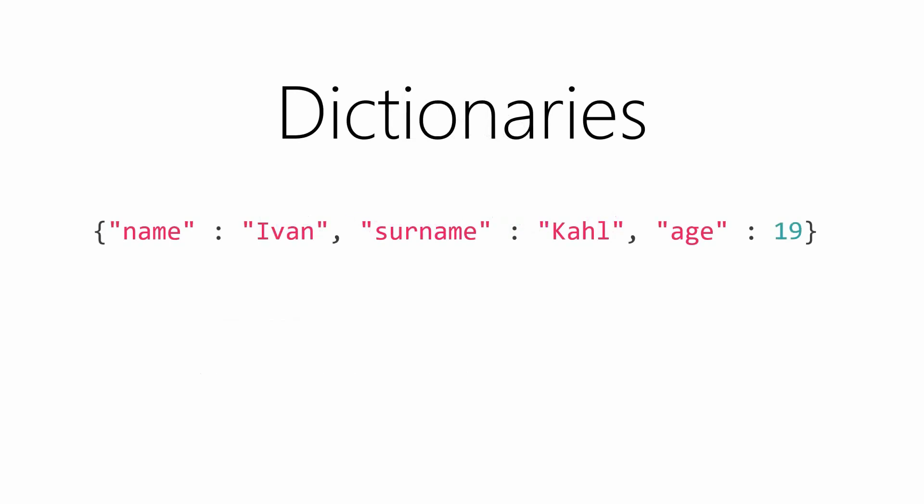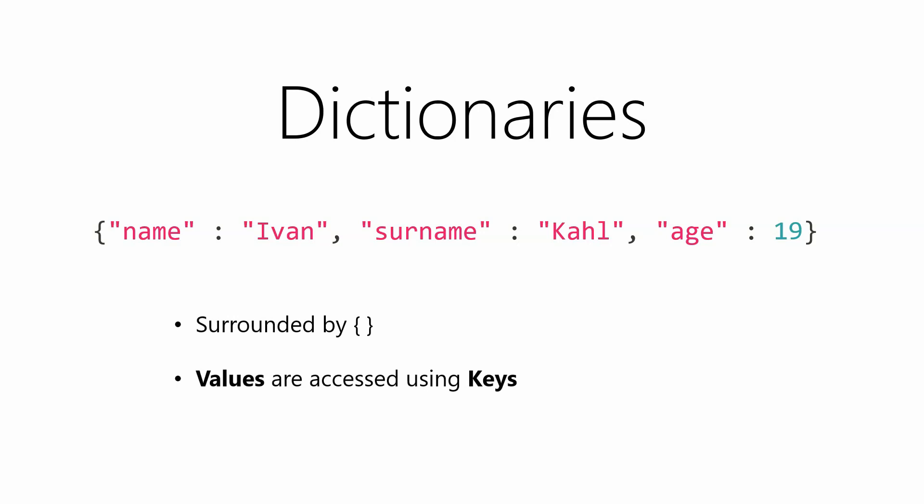A dictionary is similar to a list in that it's also a collection of items. But instead of referring to each item based on its index, we give it a key and we use that key to refer to it. So our item Ivan has a key of name — whenever we want to retrieve Ivan, we use the key name. In Python, dictionaries are surrounded by curly brackets. The values are accessed using the keys instead of indexes, and it can also contain a mixture of data types.